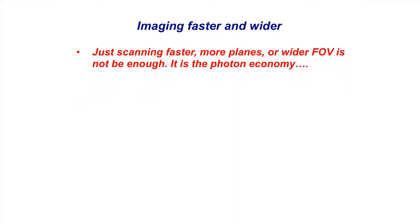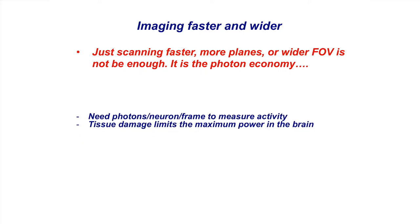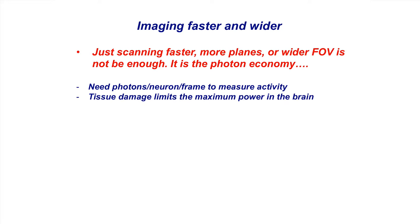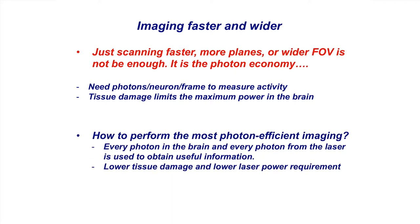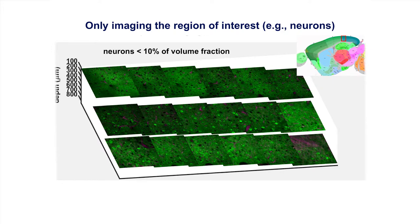Now, a new unpublished idea: how to image not just deep but also much faster. Scanning faster is necessary but not sufficient — eventually you don't have enough photons per pixel. This is a fundamental photon budget problem. You need sufficient photons per neuron per frame to measure activity accurately, but tissue damage limits laser power into the brain. The solution is photon-efficient imaging: every photon from the laser should provide useful information, minimizing both tissue damage and laser power requirements.